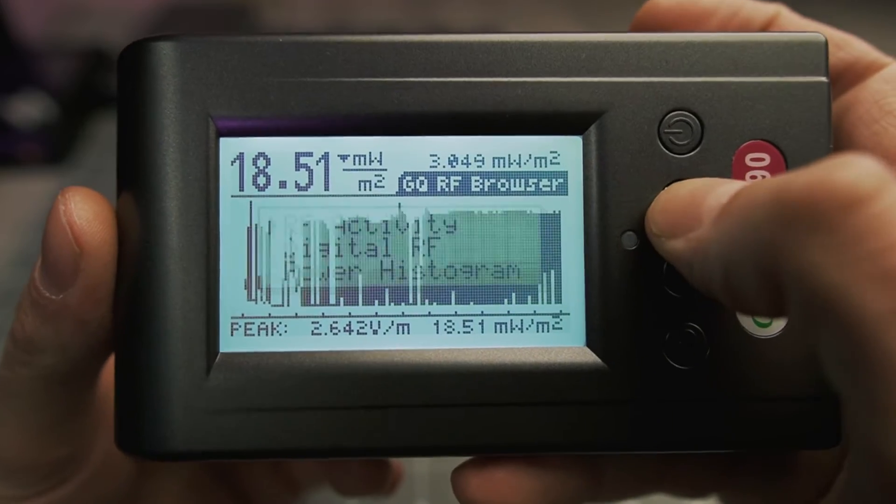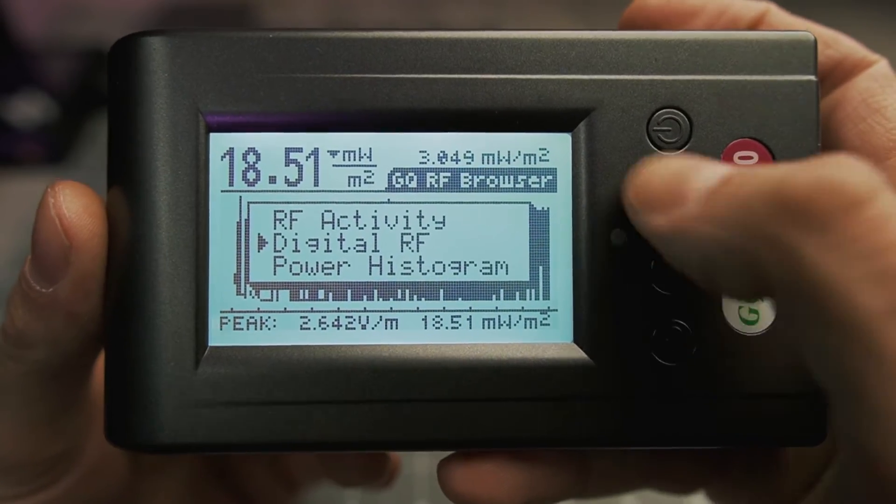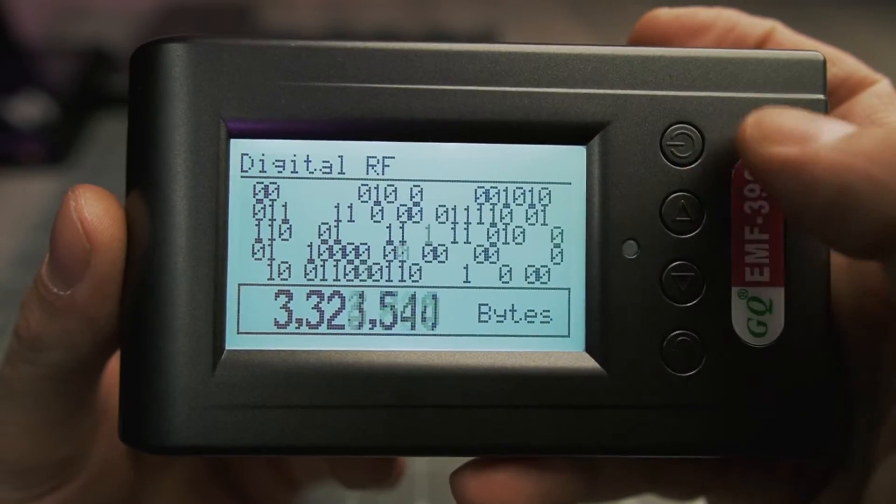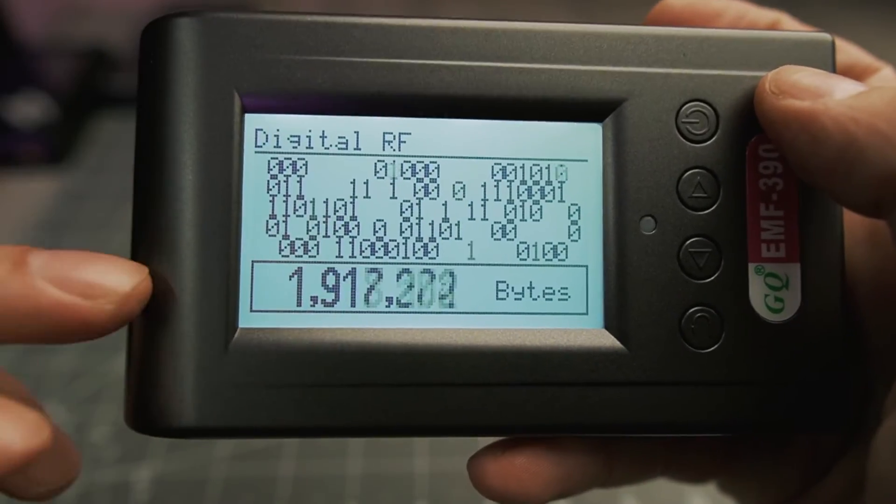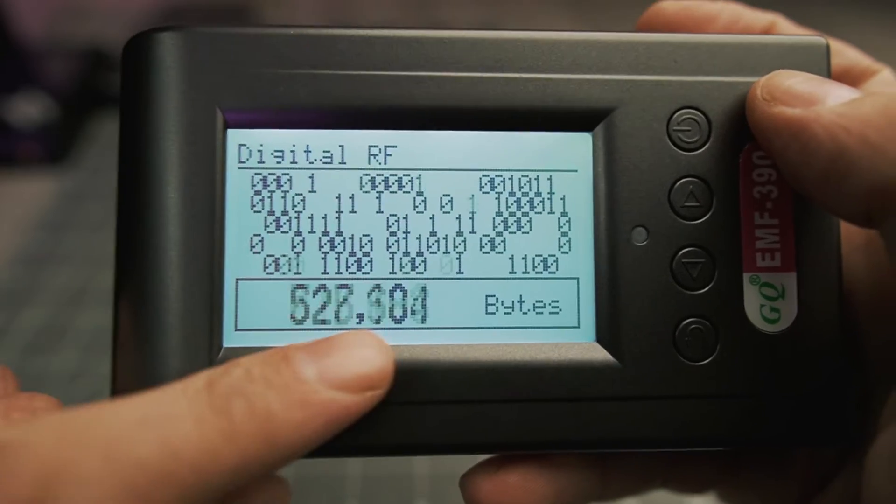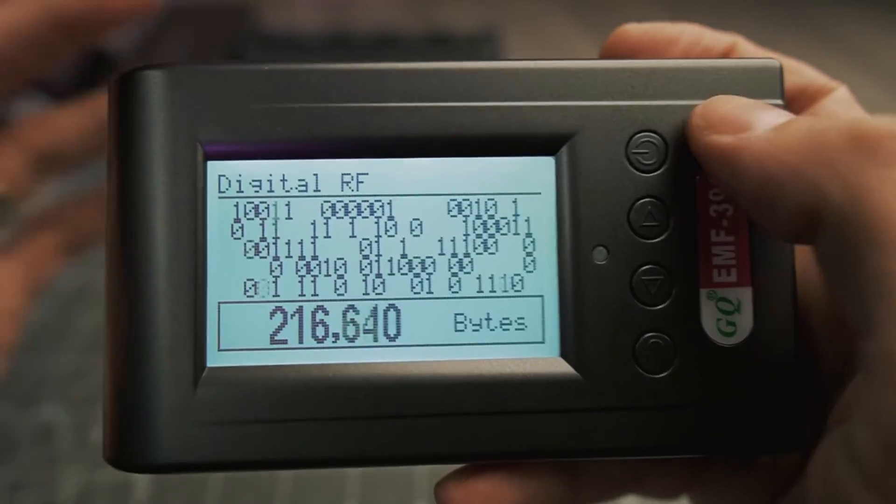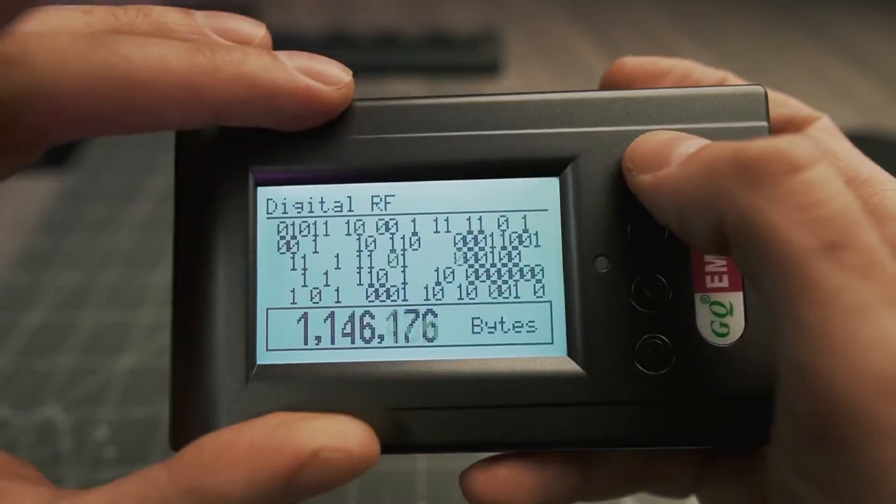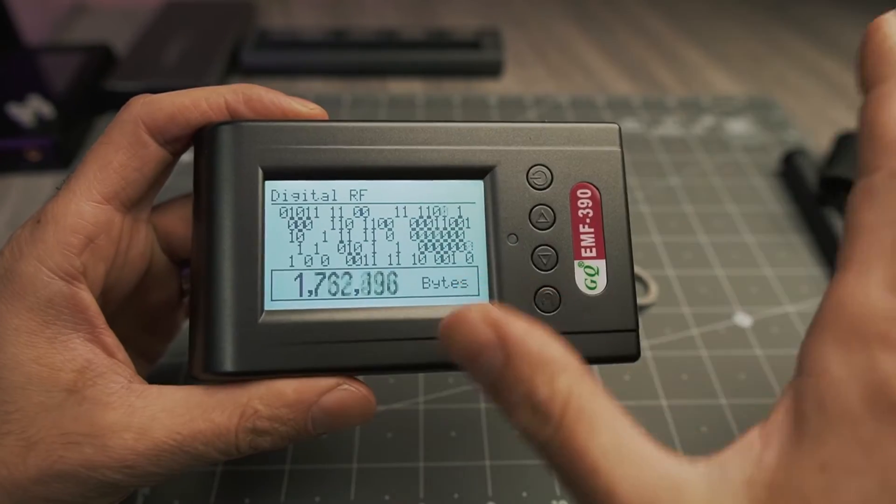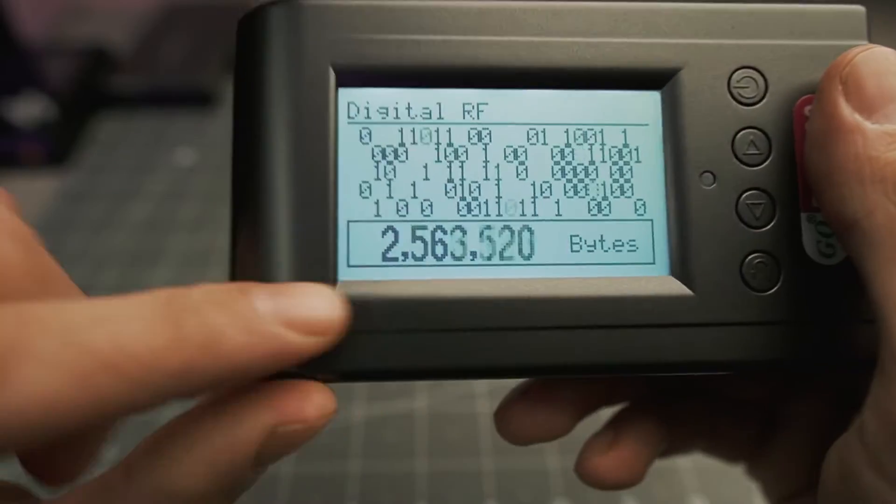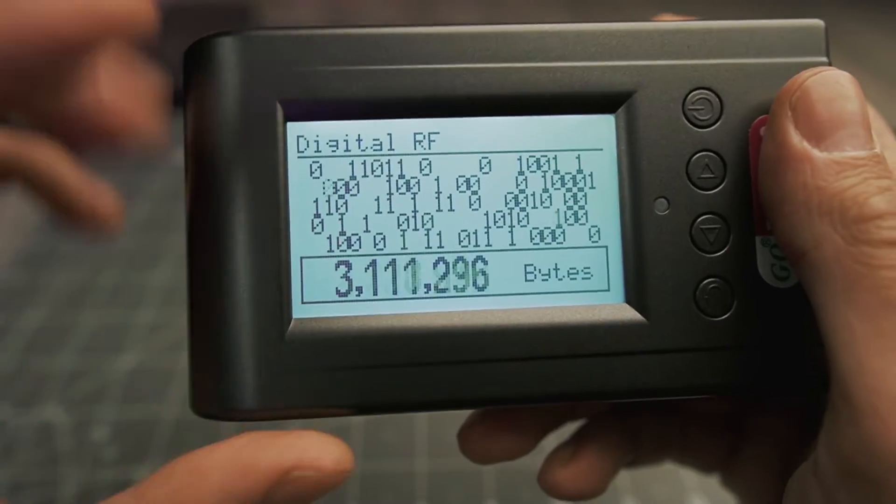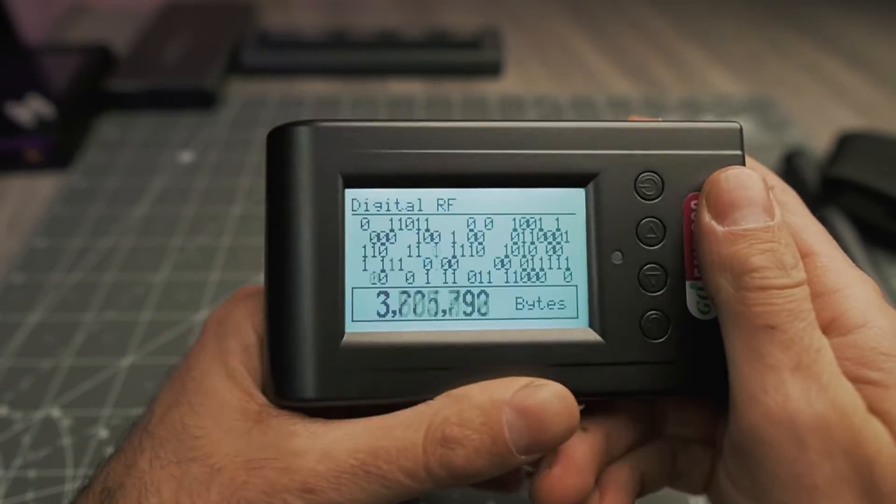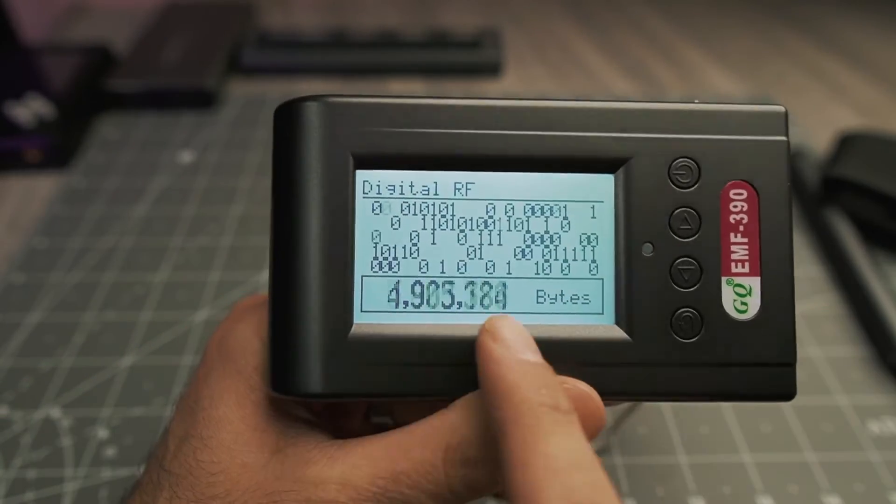The RF browser mode also has the digital RF screen, which will attempt to estimate the amount of data that is being transmitted over the entire RF spectrum. Now you got to keep in mind in a noisy environment like this, where I have a lot of equipment around, this isn't going to be super helpful, but if you have a relatively low noise environment, this data might be useful.